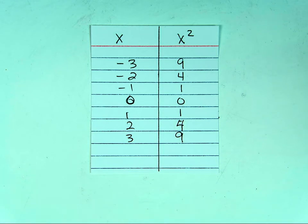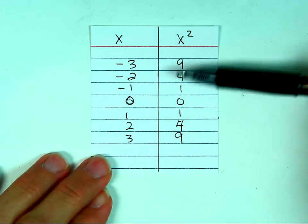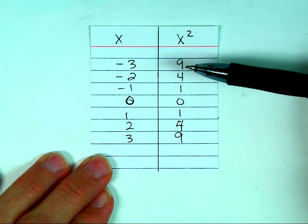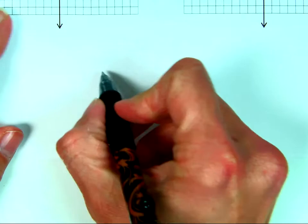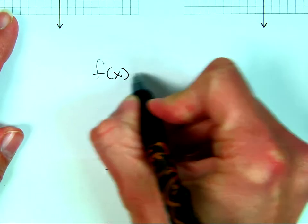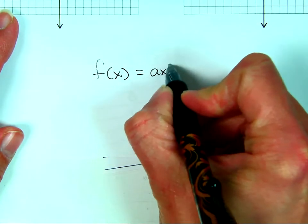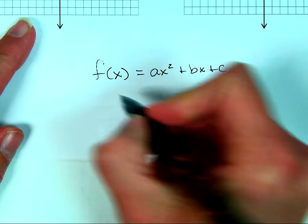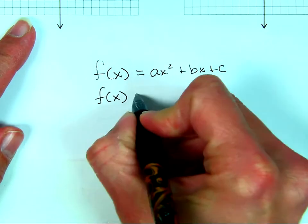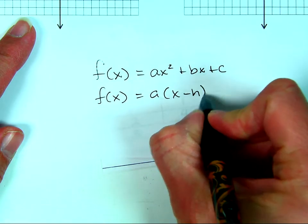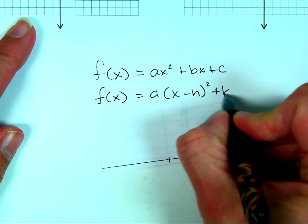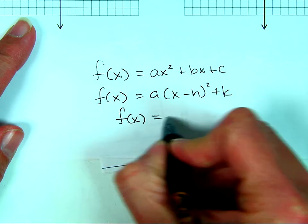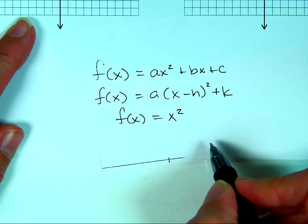So if you remember correctly, these are just some points in x squared — the parent function of the quadratic function. We have f(x) = ax² + bx + c in standard form, or in vertex form, a(x - h)² + k. The parent function that they all come from is x squared.